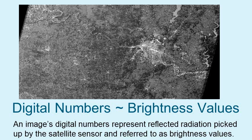With the launch of the new Operational Land Imager, or OLI sensor, on Landsat 8, the range of values is from 0 to 4096, which means that there are many more possible shades of grey, resulting in it being easier to distinguish between features.